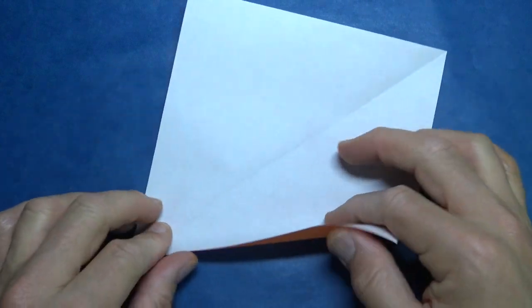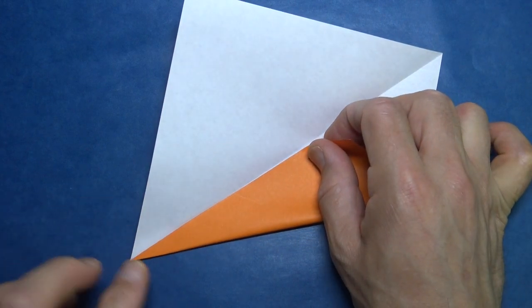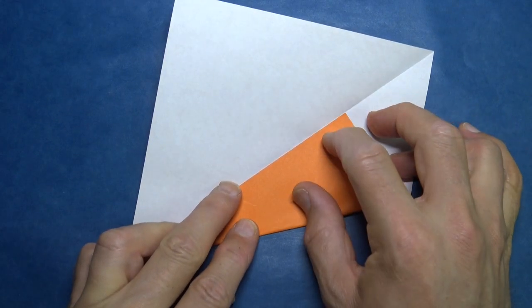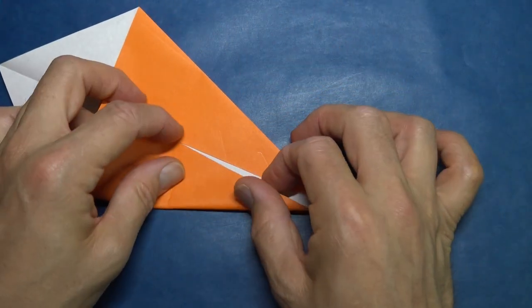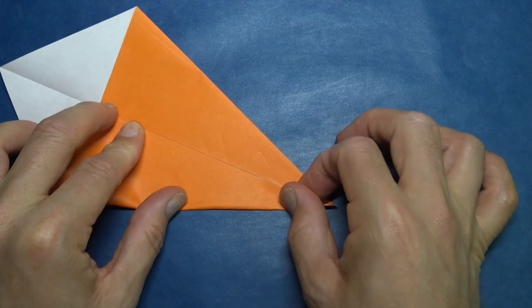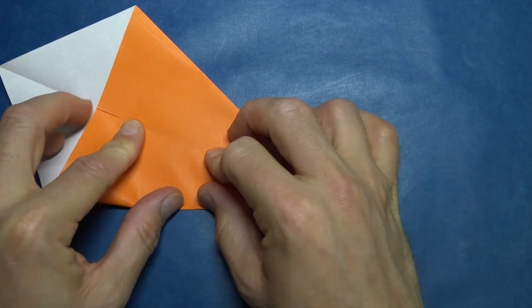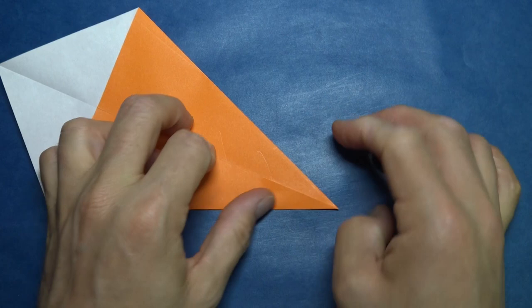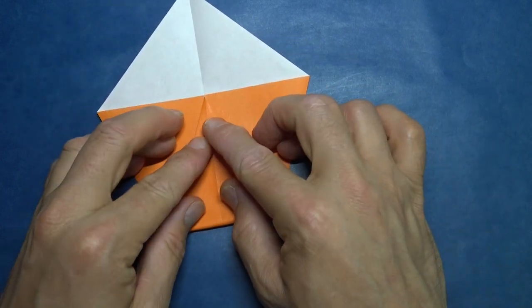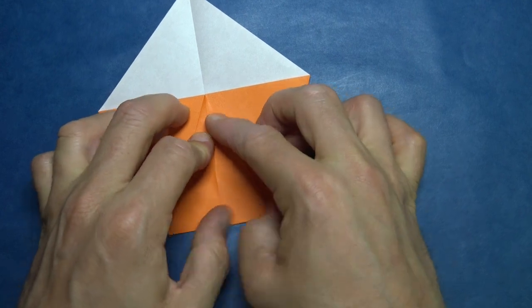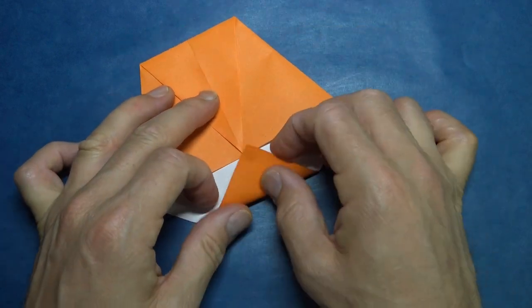Unfold and fold to the crease. Make sure to come right to the point. And repeat. Fold this corner to here, and fold this corner.